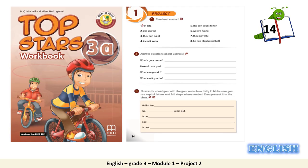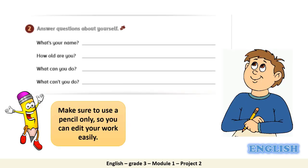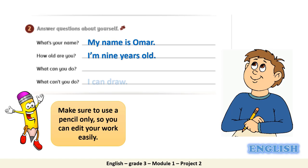Now please open your workbook, page 14, and let's work on activity 2 together. We are still in the pre-writing stage and we are going to answer questions about ourselves. I will show you how I did it, and then I want you to pause the video and answer by yourself. Number 1: What's your name? My sentence is: My name is Omar. Two: How old are you? I am 9 years old. What can you do? I can draw. What can't you do? I can't swim. Now pause the video and try to answer by yourself. Make sure to use a pencil only so you can edit your work easily.